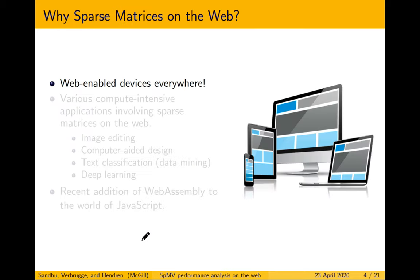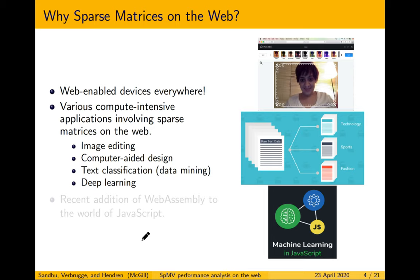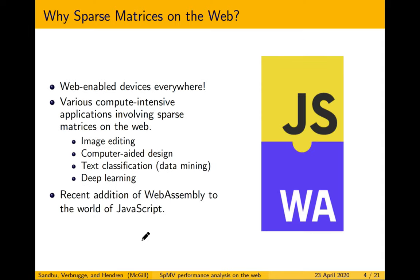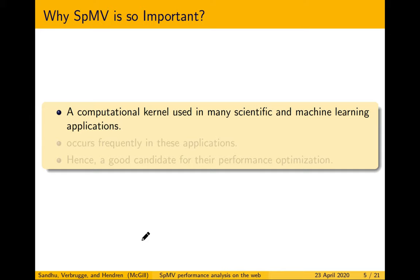In this paper we are doing structure-based performance analysis of SpMV on both native and web environments. Why sparse matrices on the web? Because web-enabled devices are everywhere and various compute-intensive applications involving sparse matrices are coming to the web — such as image editing, computer-aided design, text classification, and deep learning. Additionally, WebAssembly is a newly introduced bytecode representation designed to complement JavaScript and improve web application performance. SpMV is especially important as a computational kernel used in many scientific and machine learning applications where it occurs frequently.